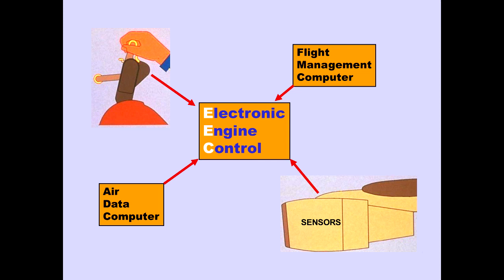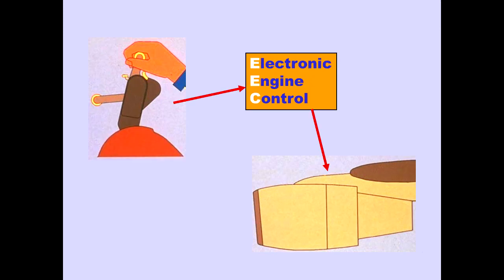The EEC receives inputs from the thrust lever, flight management computer, air data computer, and engine sensors. Thrust lever position is transmitted to the EEC electronically with no mechanical interconnection.